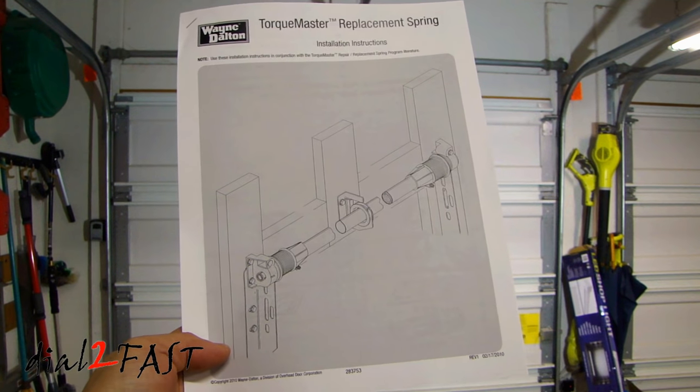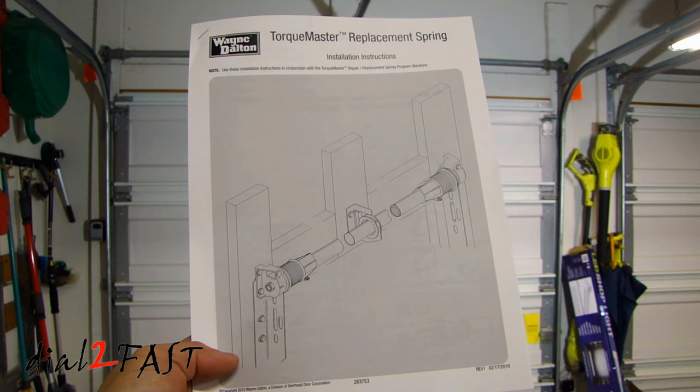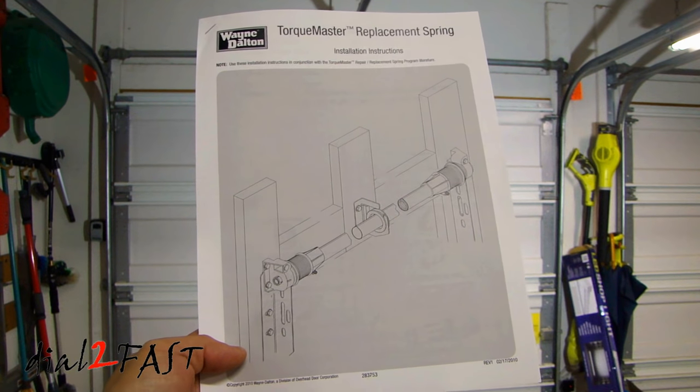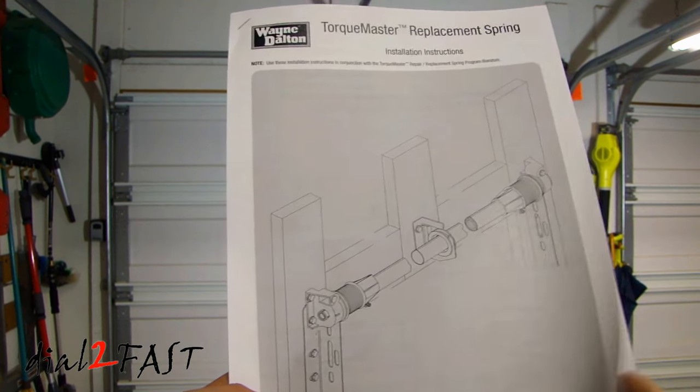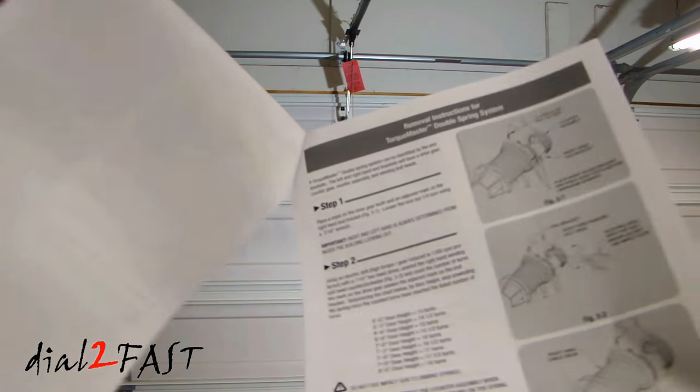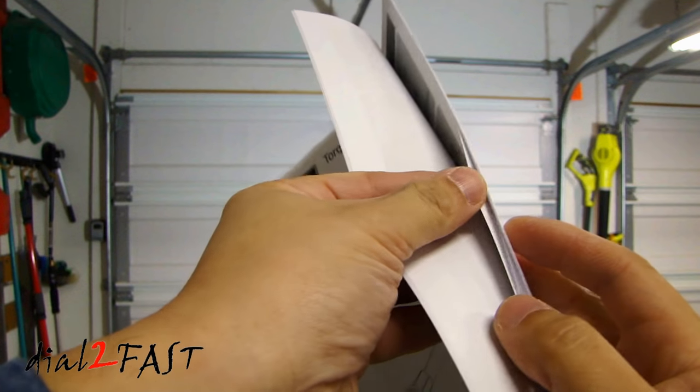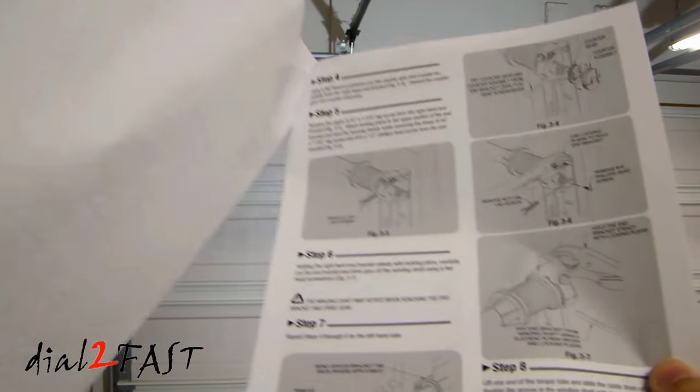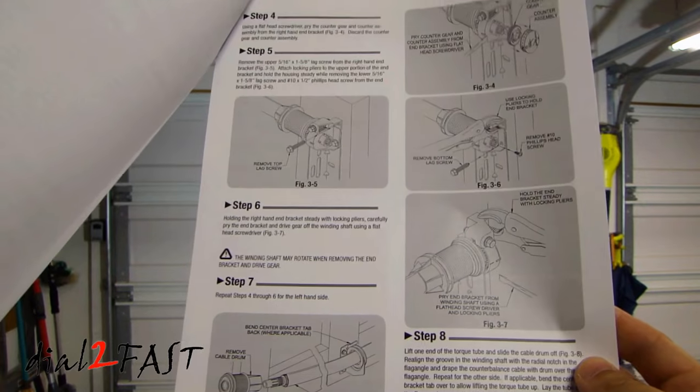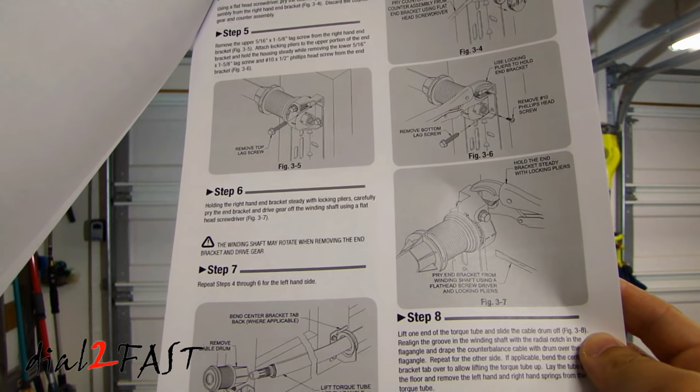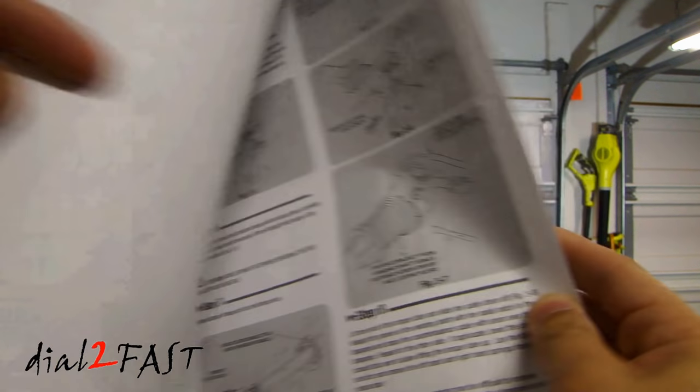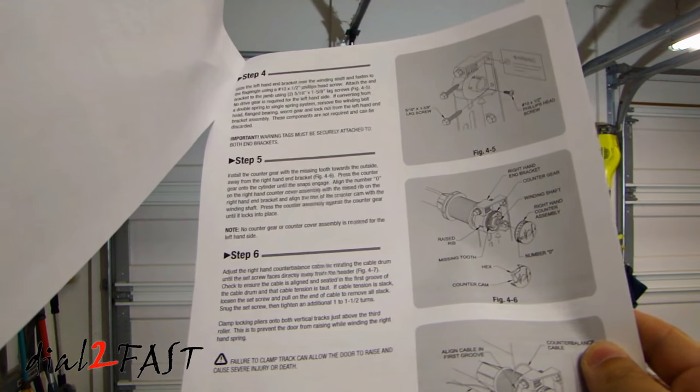Let me show you what I downloaded off the internet. This is a Wayne Dalton torque master replacement spring guide and as you can see is very good. It has tons of description and pictures to show you what needs to be removed. So look online if you need to replace your spring for this type of garage door opener, then just google torque master and you'll find a guide that you need.